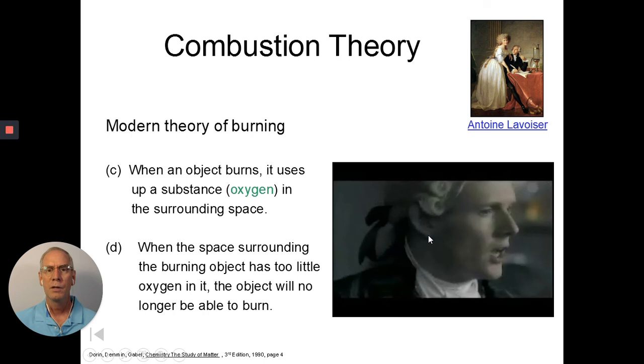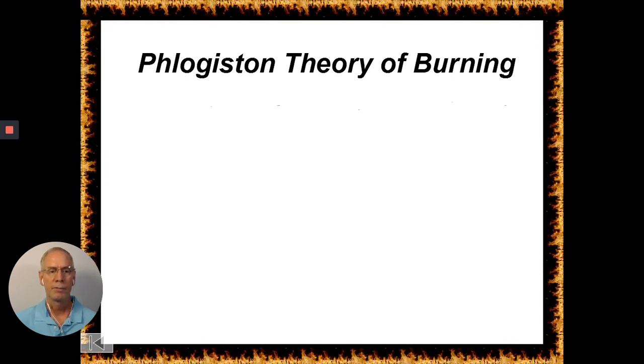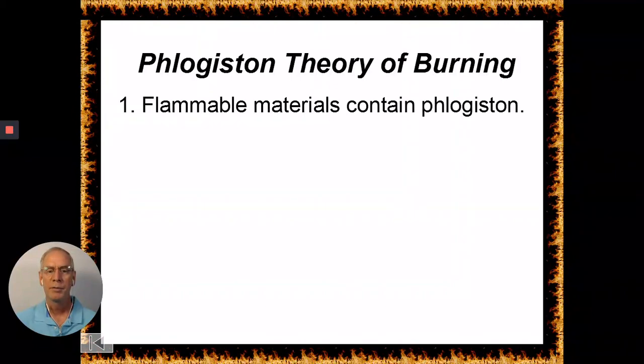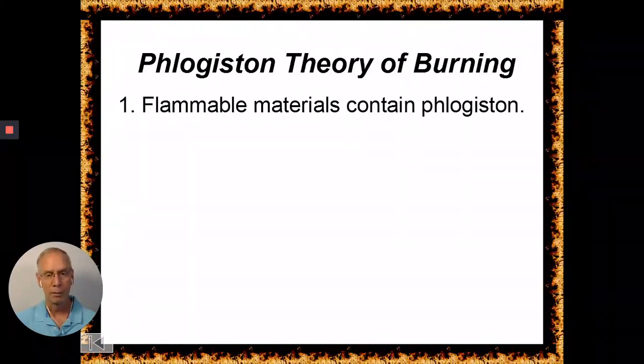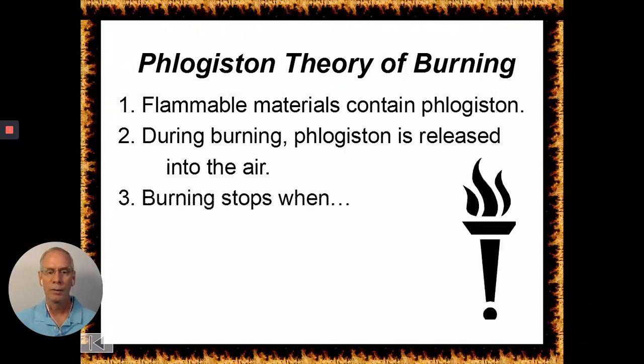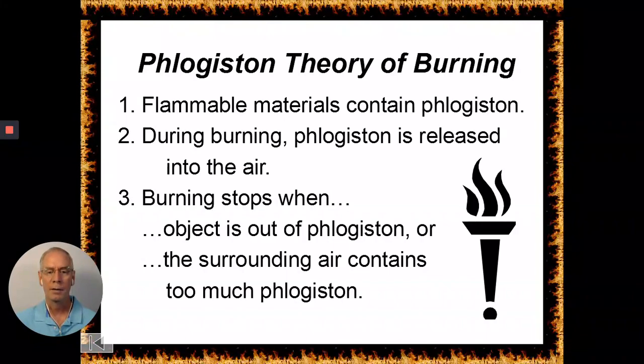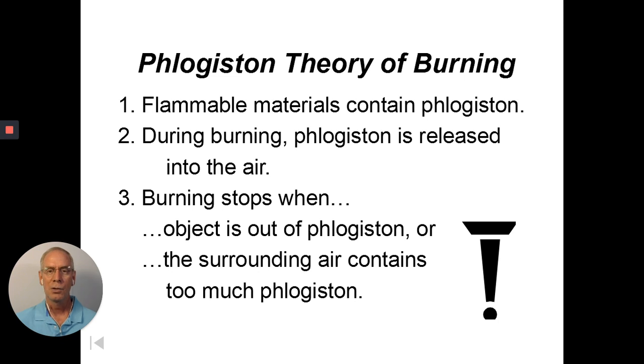We would watch this little video, but it's not that interesting, so I'm not going to click it. I'm just going to keep moving on. And so, here is the phlogiston theory one more time. Flammable materials contain phlogiston. Those that don't burn contain no phlogiston. When a substance is burning, it releases phlogiston into the air. Burning stops only when the object is out of phlogiston or the surrounding air contains too much phlogiston, and then it will go out. So, theories change.